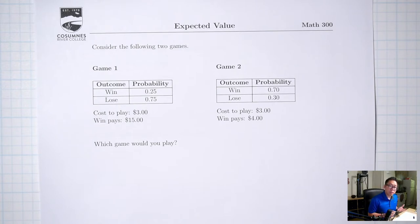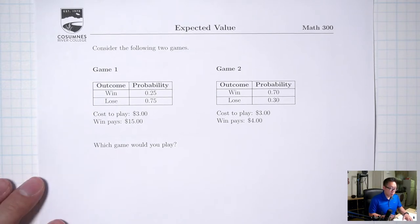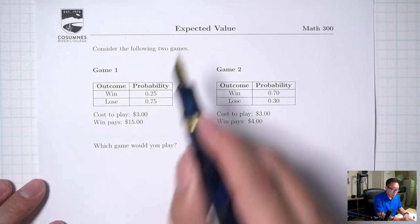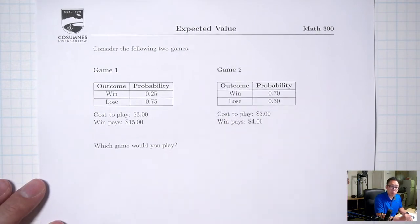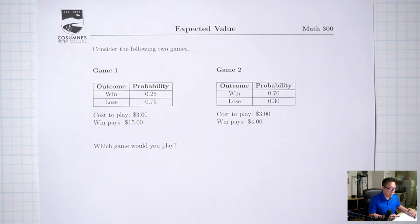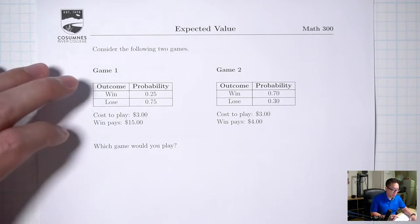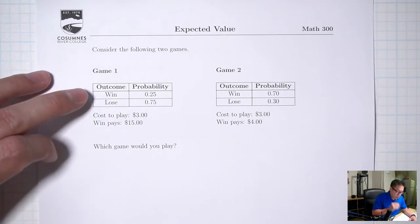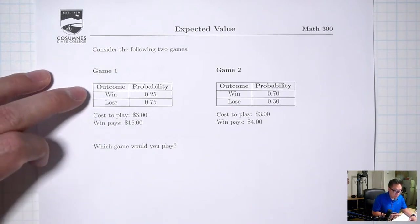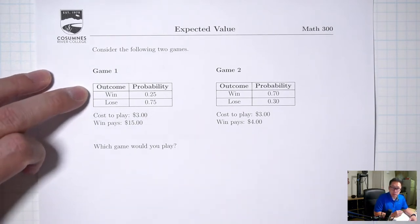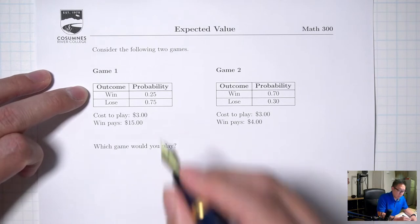One way to decide is to look at the expected value of each game. To find expected value, I first need to write down the profit of winning and losing for each game.